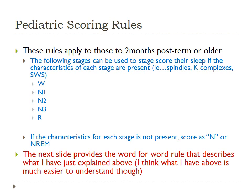Pediatric scoring rules apply to any child that is two months post-term. You might see the term post-conception used, in which case these rules apply to any child 48 months post-conception. For example, if a child is born at 36 weeks — slightly premature — you wouldn't be able to apply these rules until three months after delivery, which would be the 48-week post-conceptual time. That's when the two-months post-term rules begin.